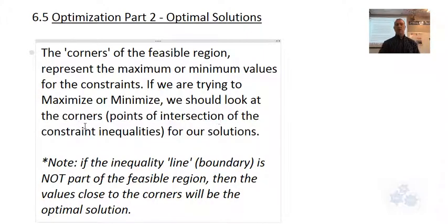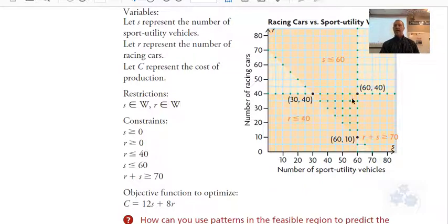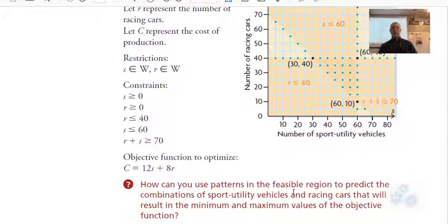If we're trying to maximize or minimize, we should look at the corners for our solutions. Note: if the inequality line, that is the boundary line, for any reason is not part of the feasible region—so if it's not greater than or equal to, or less than or equal to—then the values close to those corners will probably be the solution. Basically, if any one of these constraint lines, if any of those were not 'or equal to,' then the point that lies on that line would not be able to be considered. But you could see that maybe there's another point right here that could be pretty close to this line but not on it. So one of these points might be the maximum or minimum.